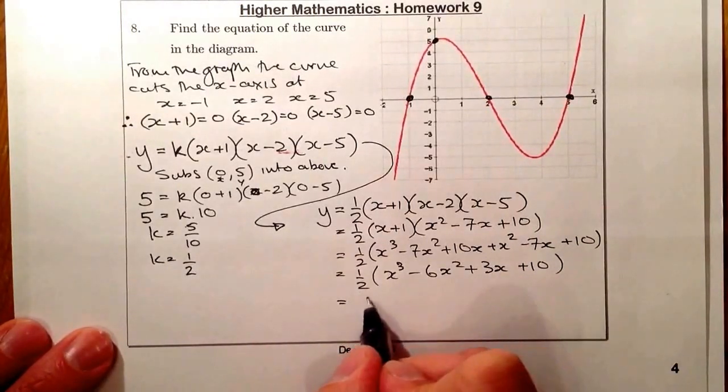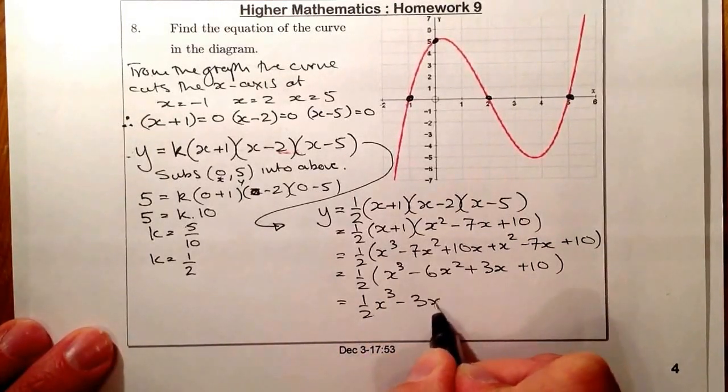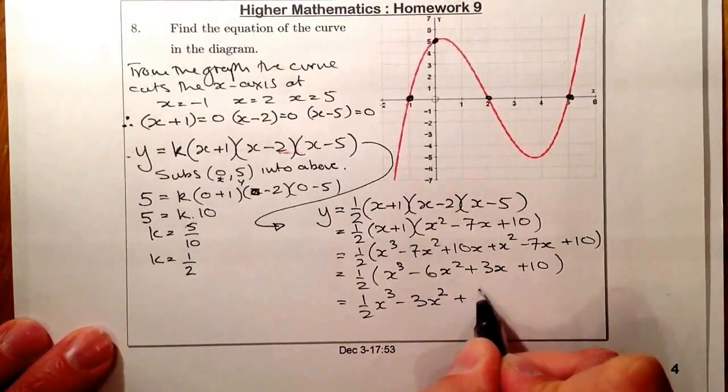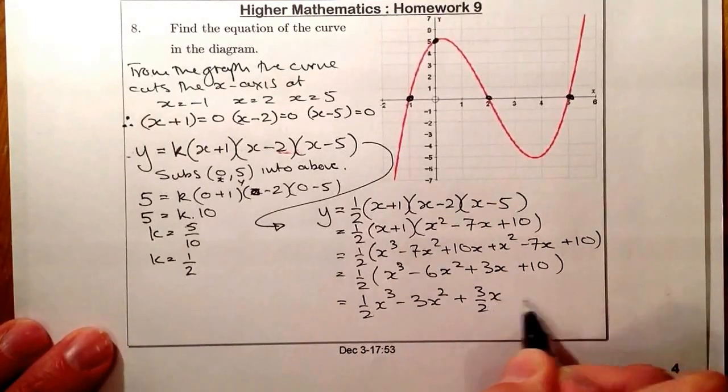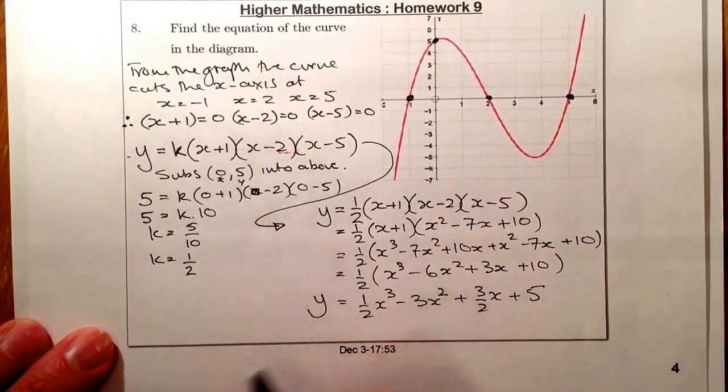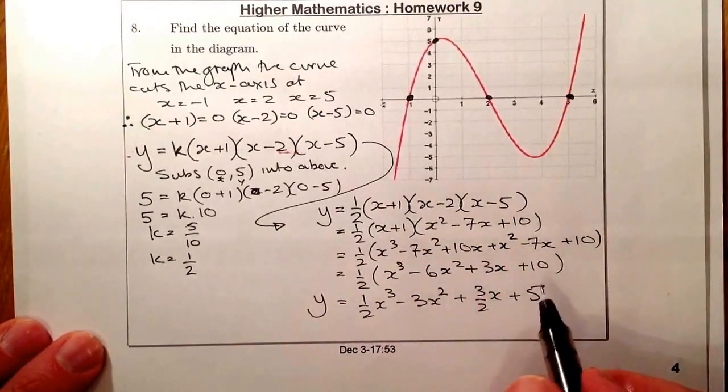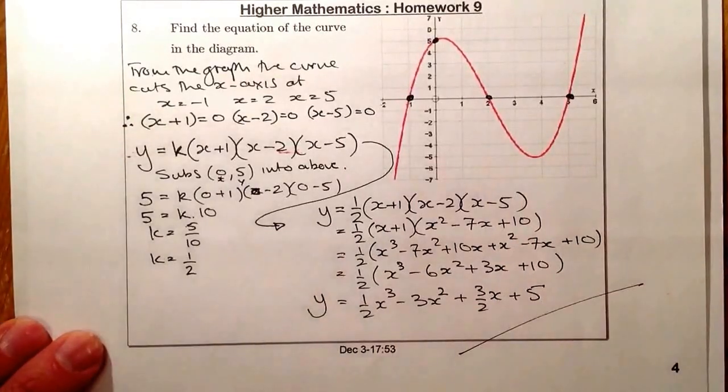Multiplying now by the half, so that will give me a half x cubed, minus 3x squared, plus 3 upon 2 x, plus 5. So that is my final equation. So that is the curve in the diagram. That's the end of that question.